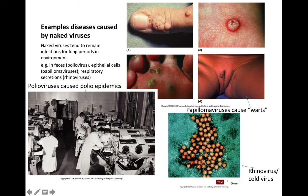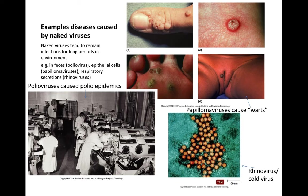Poliovirus is a naked RNA virus with fecal-oral transmission. The virus replicates in intestinal epithelial cells and is shed in feces. In a subpopulation of polio victims, the virus can invade the nervous system and cause paralysis — not only preventing walking, but also affecting the muscles involved in respiration, potentially causing death from suffocation.